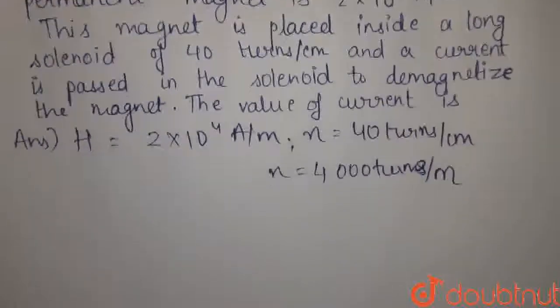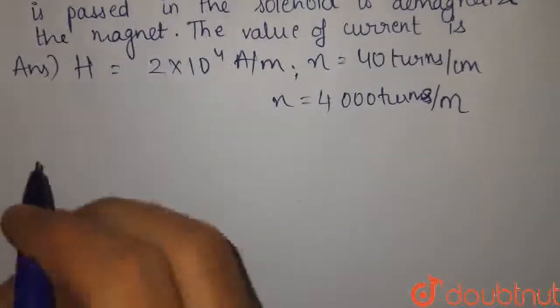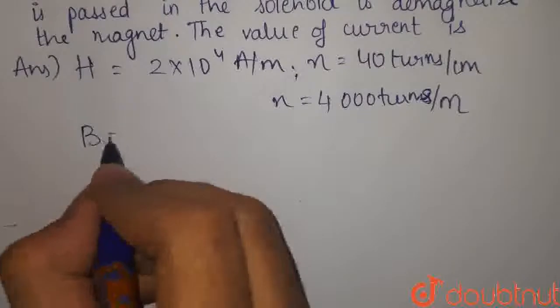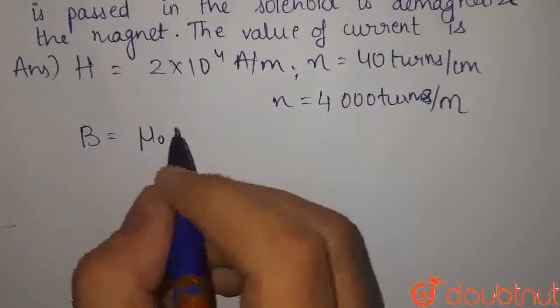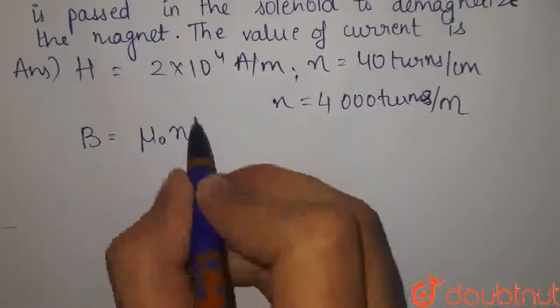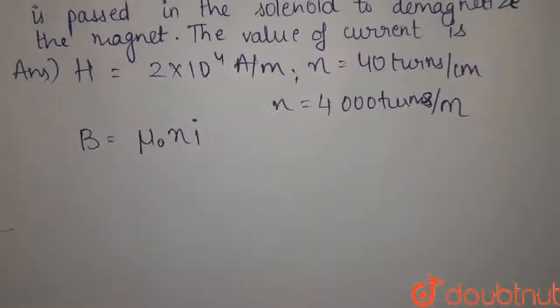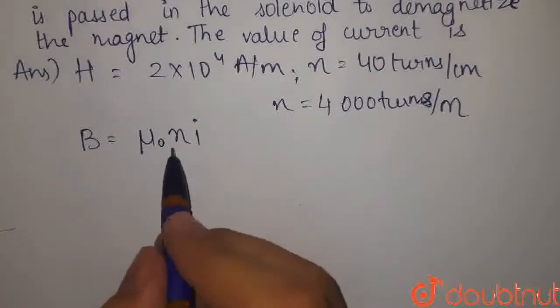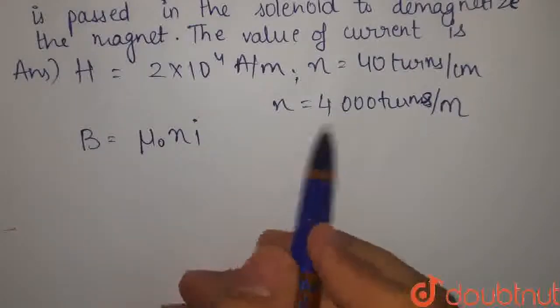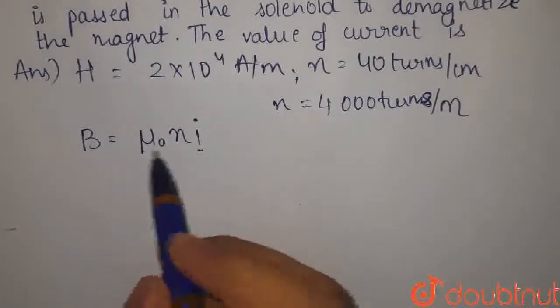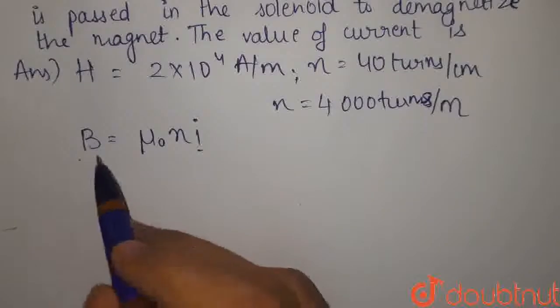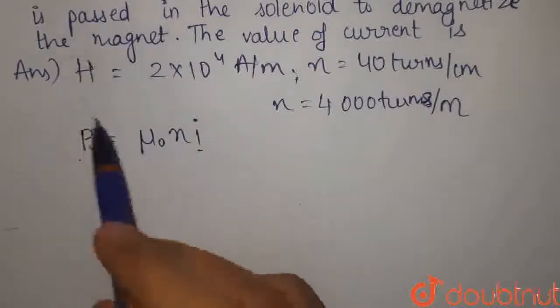हमें calculate करना है current I. We know the formula for B. B क्या होता है? mu 0, ni. यहाँ पर हमारा mu 0 तो constant है. N हमारा है number of turns, वो हमाँ पास है. current हमें ढूंढना है, पर हमें value of B नहीं पता. But we have a relationship between H and B.